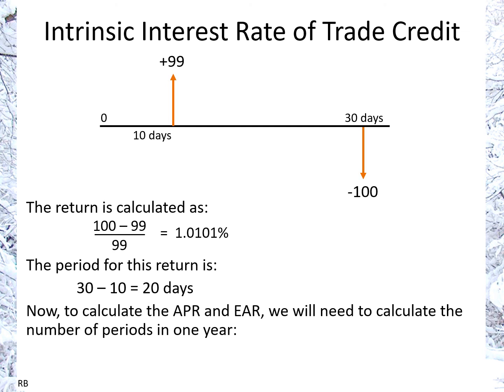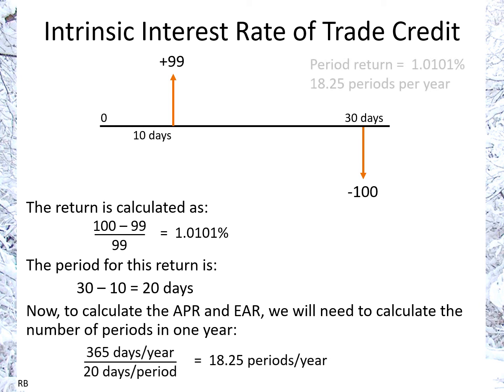To calculate the APR and the EAR, we need to calculate the number of periods for one year to annualize it. The number of periods is based on the days: 365 days divided by 20 days per period, giving us 18.25 periods a year.